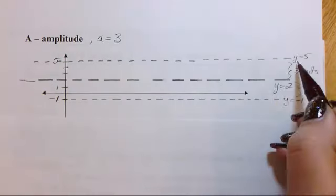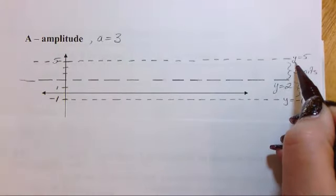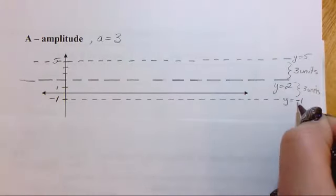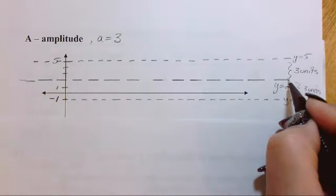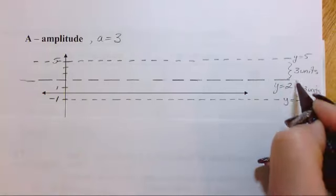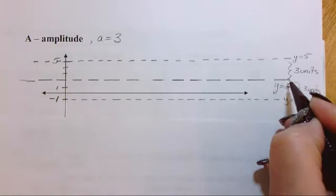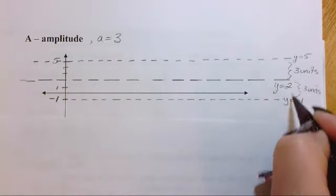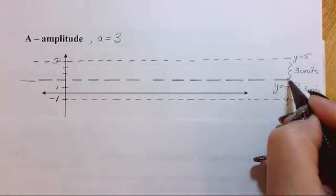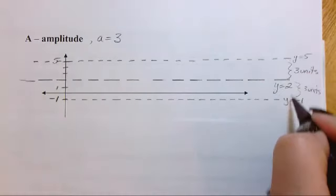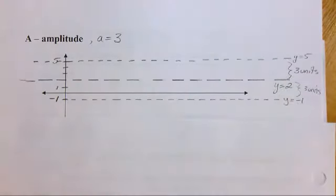So we end up at the highest point is going to be y equals five. And the lowest point is going to be y equals negative one. And you can clearly see that from our midline y equals two, we have a distance of three units from the mid to the bottom and from the mid to the top. So this is going to help us figure out what our range is.